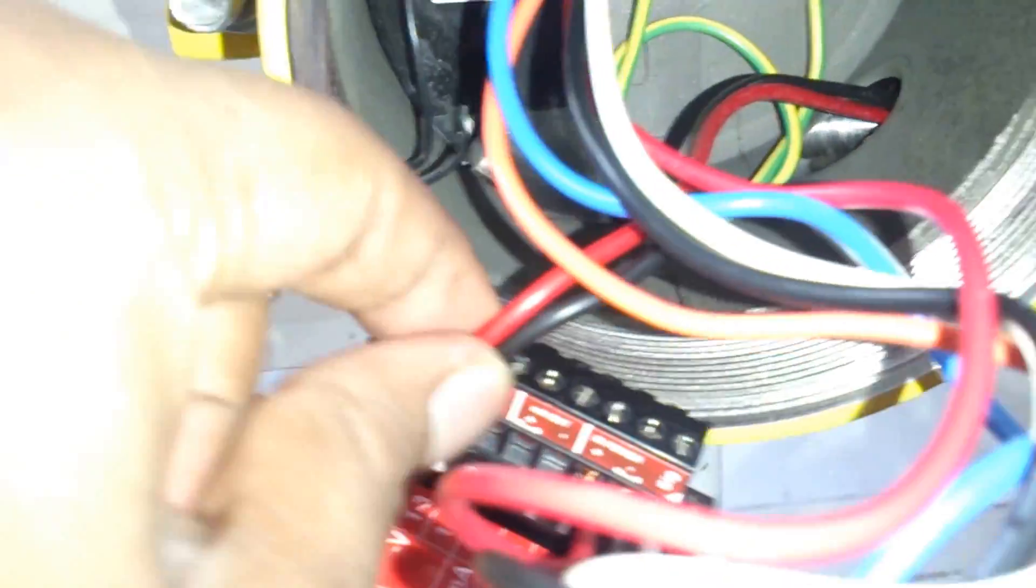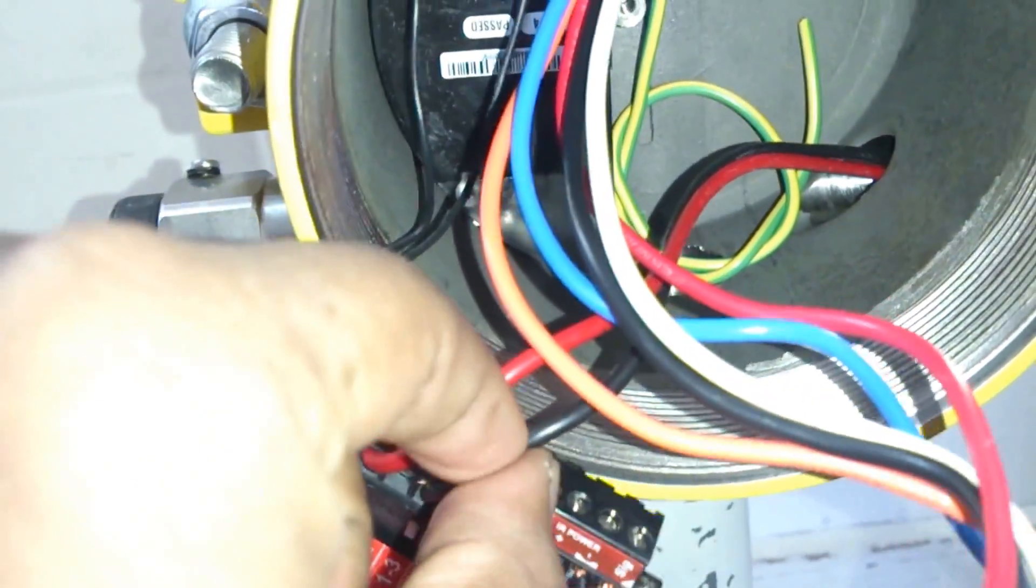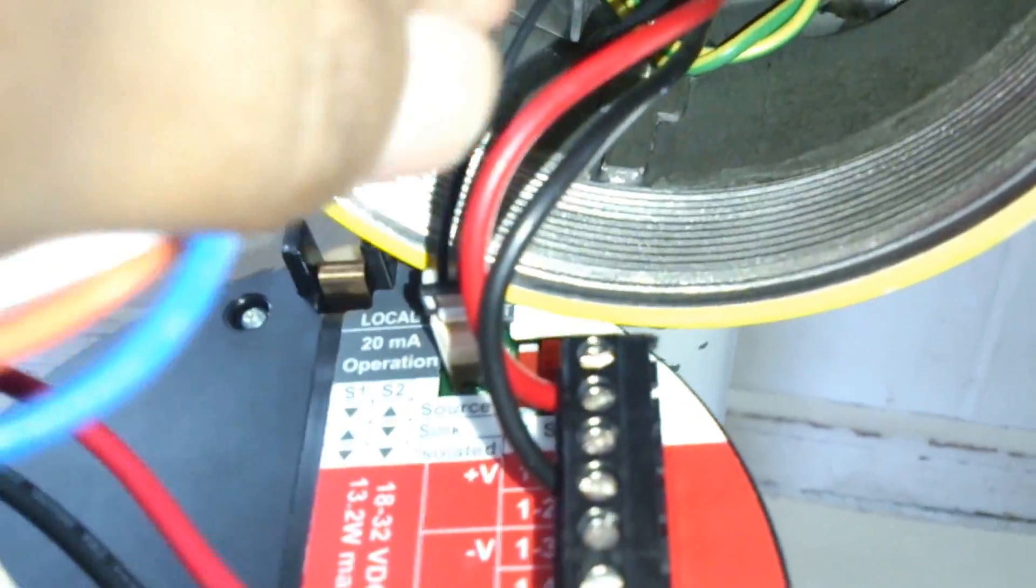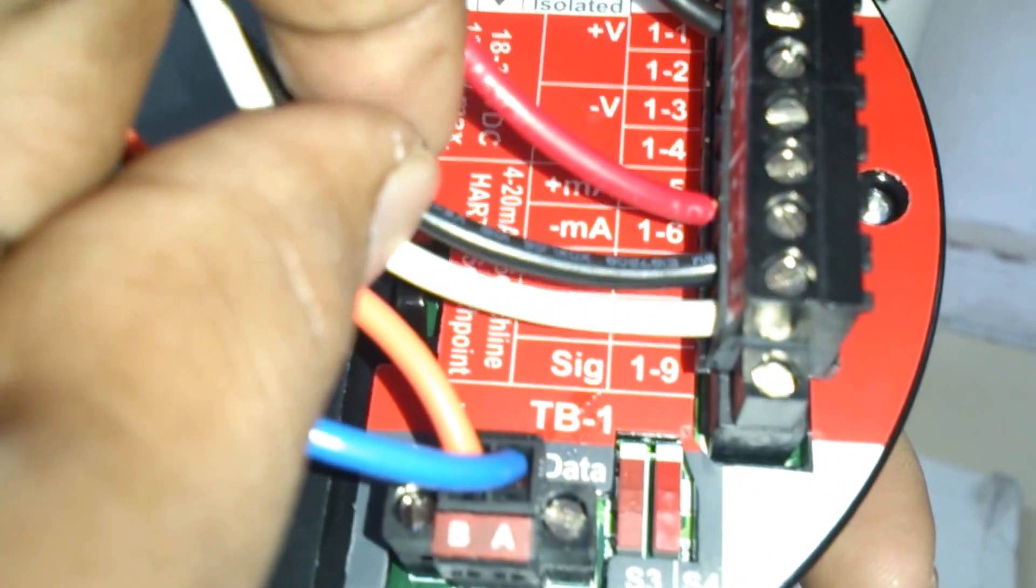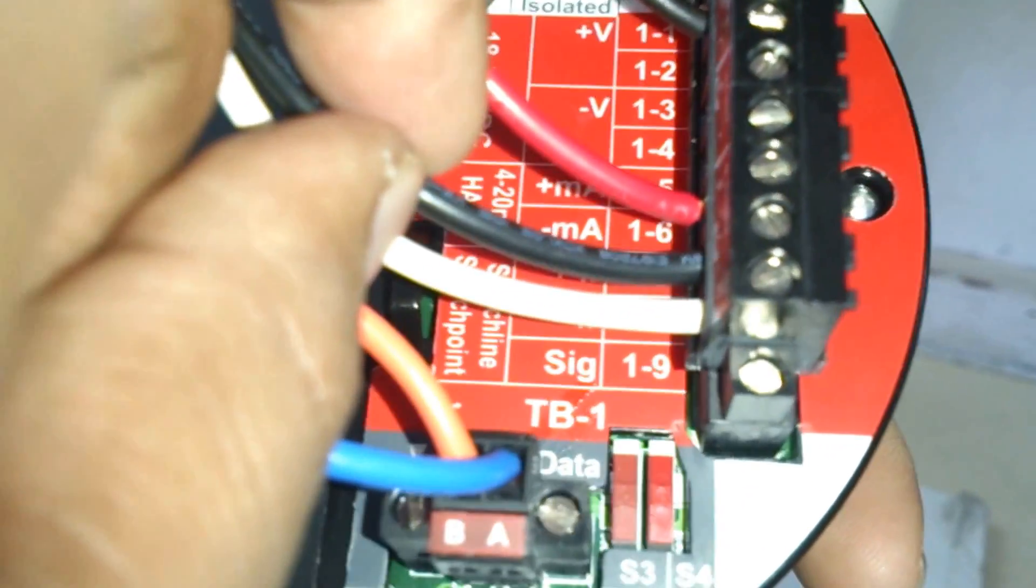As you can see, the red and the black wires here are the input voltage source. It is connected either to an external source or to the controller. Next we have the cables red and black connected to the sensor, that is the voltage positive and negative.